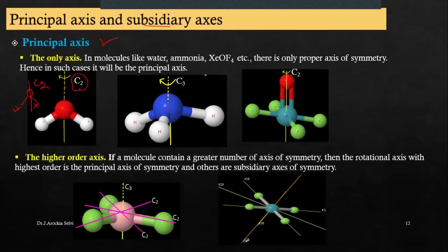Another example is ammonia, NH3. NH3 is pyramidal in shape, and the C3 axis passes through nitrogen. Any other axes possible? No. So only C3 is present, and that will be the principal axis.